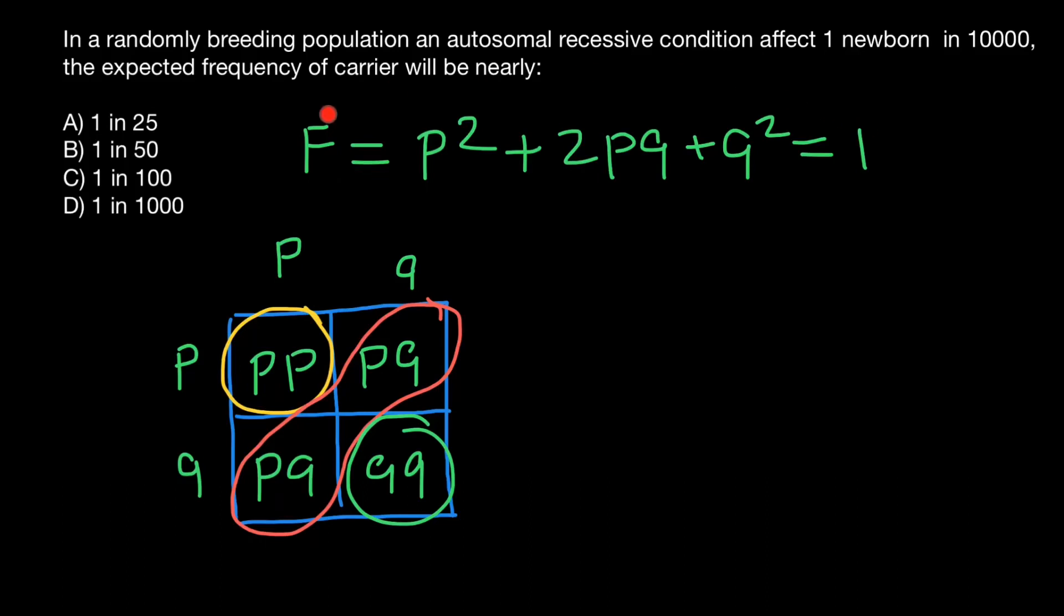So this is the Hardy-Weinberg formula. And we're told that an autosomal recessive condition affects one newborn in 10,000. And that means that these two genotypes, in simple Mendelian genetics, mean a normal phenotype, and affected would be this genotype. And the frequency is one out of 10,000.